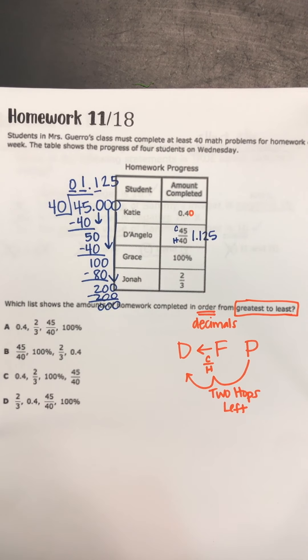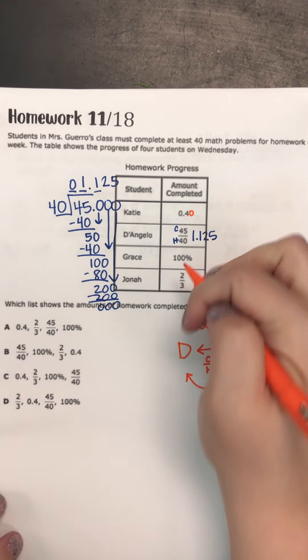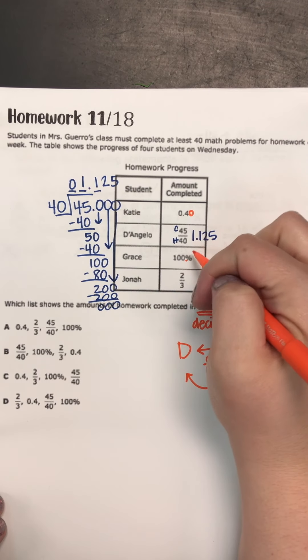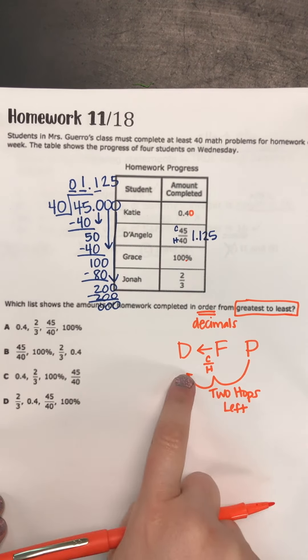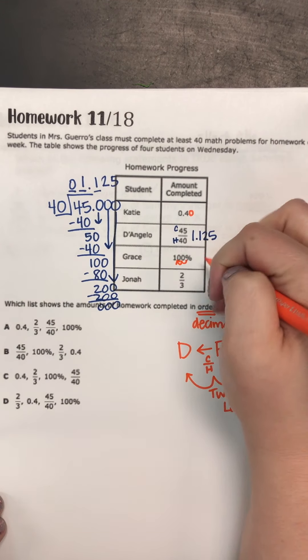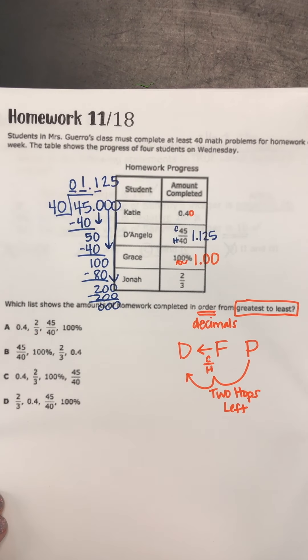All right, this one is a percentage. So anytime a percentage doesn't have a decimal, the decimal, remember, is going to be invisible at the back. So in order to turn it into a decimal instead of a percent, we need to do our two hops to the left. So one and two, and our decimal will be 1.00.